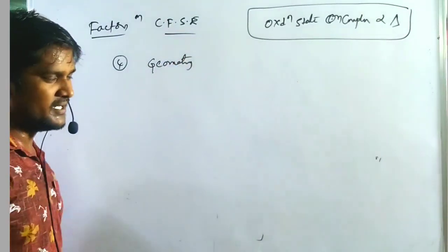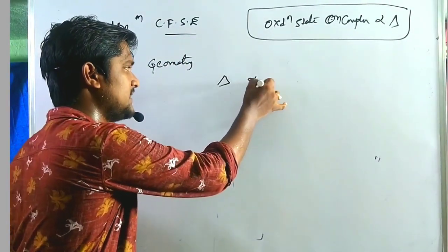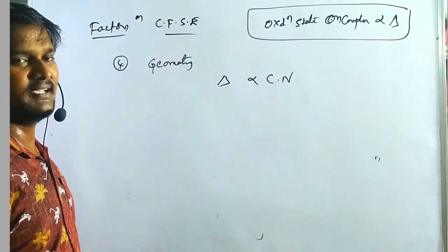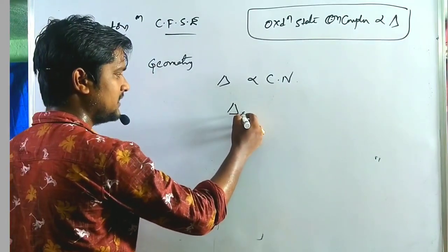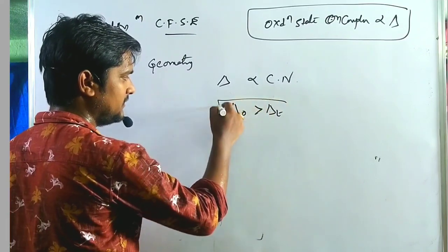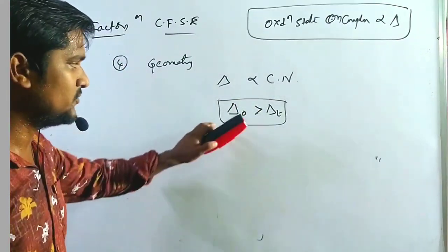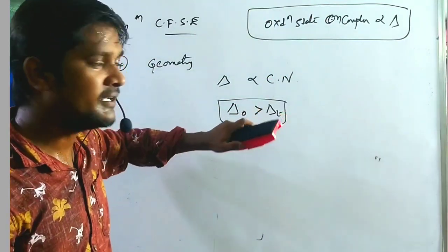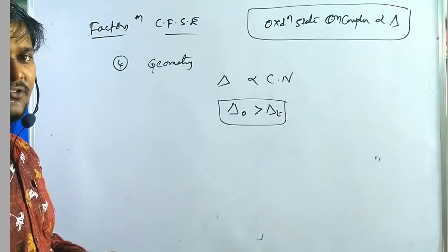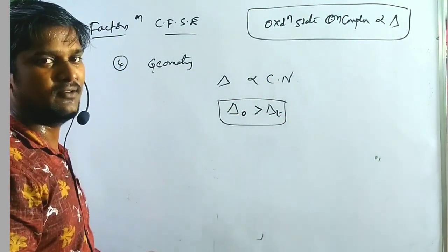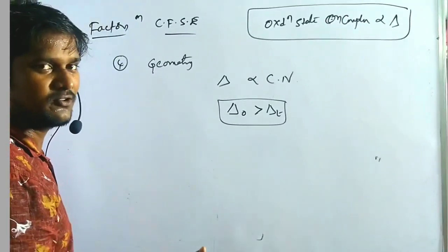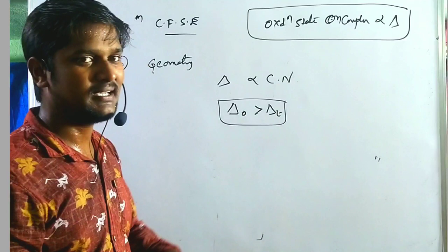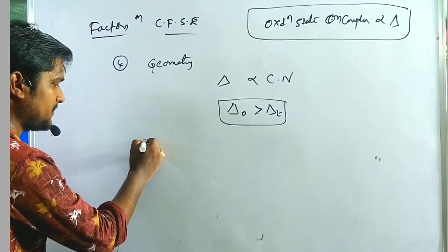The fourth factor is geometry. Crystal field splitting is directly proportional to coordination number — as coordination number increases, crystal field splitting increases. Delta O is greater than delta T. Delta O has orbital energy values of +0.6 and −0.4, while delta T has −0.267 and +0.178, so delta O is greater than delta T.